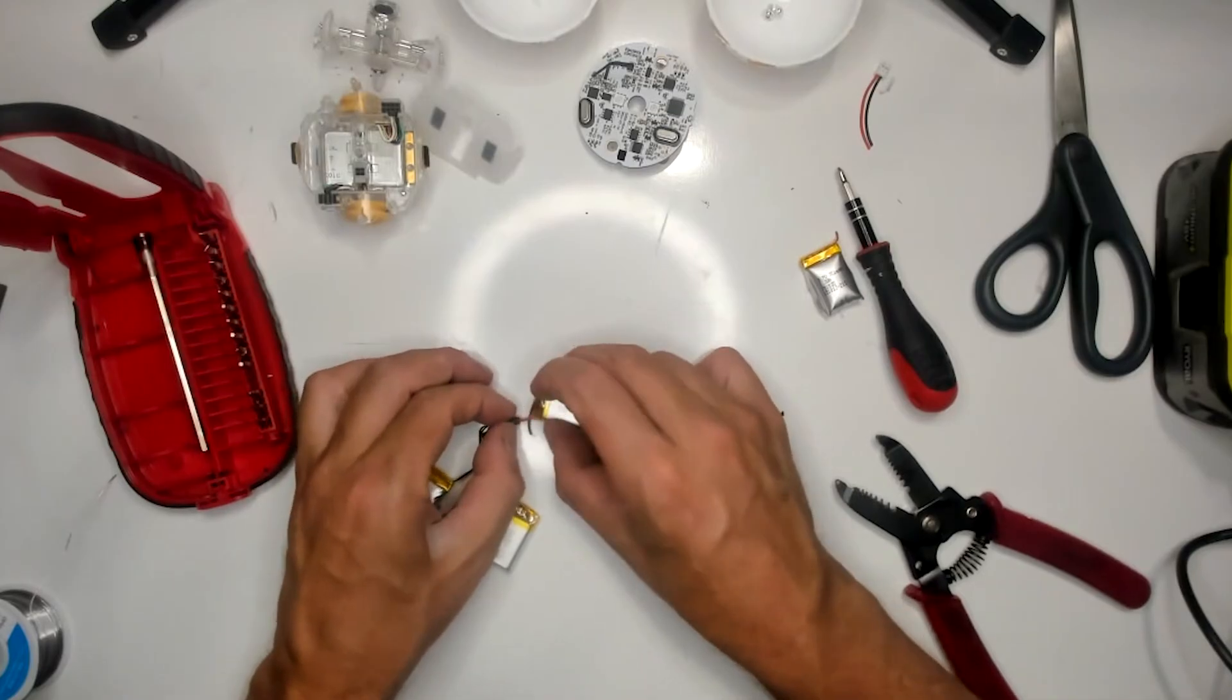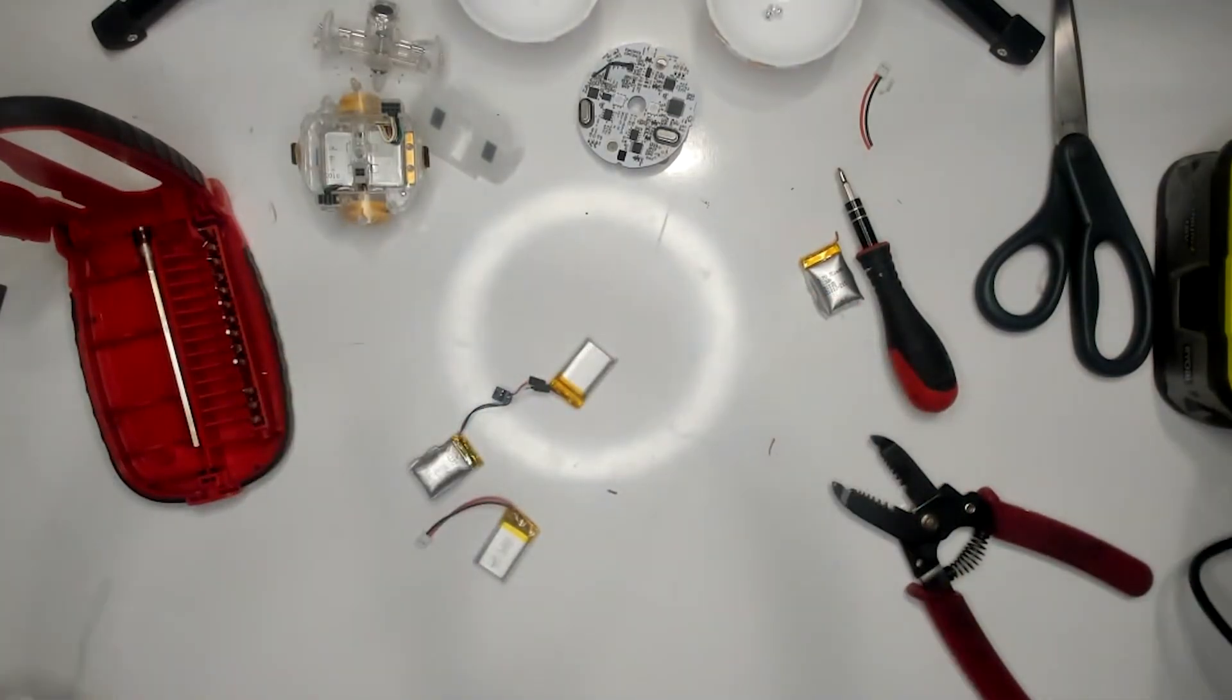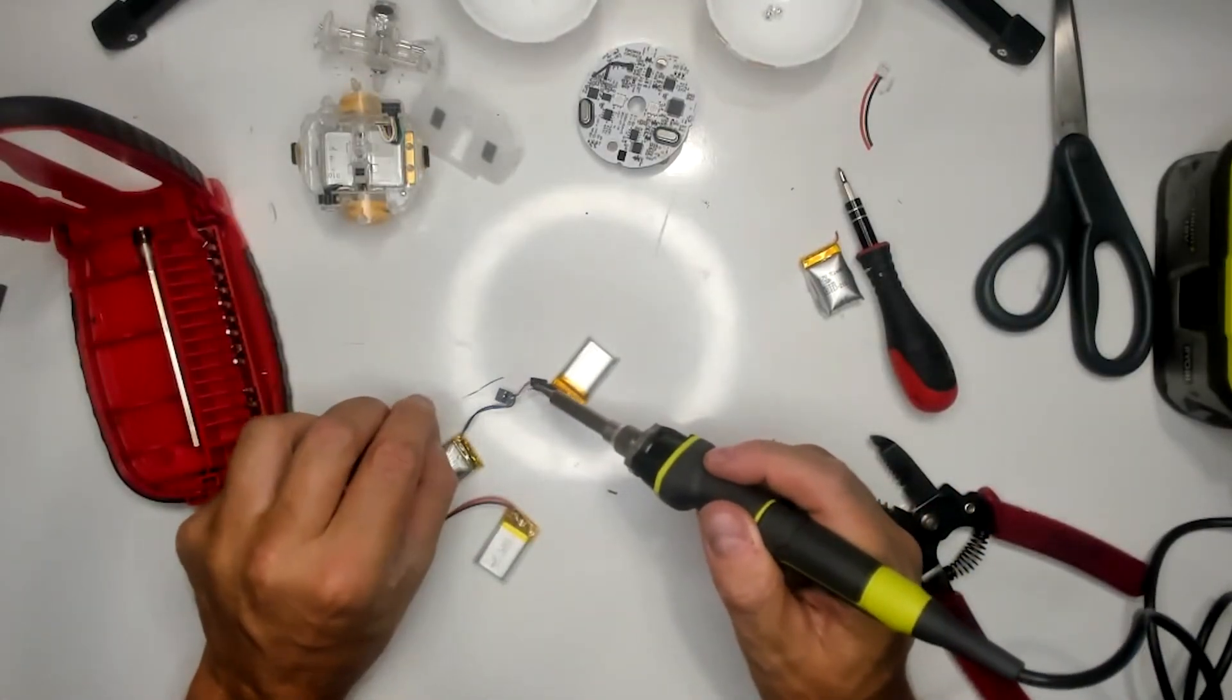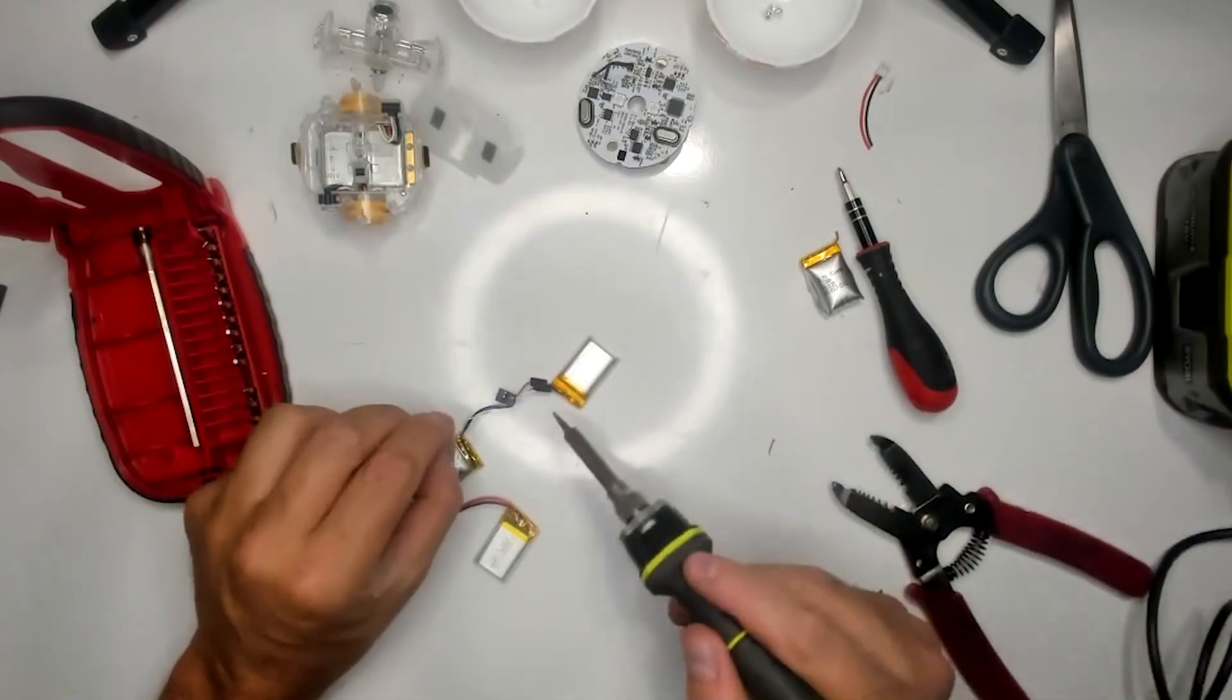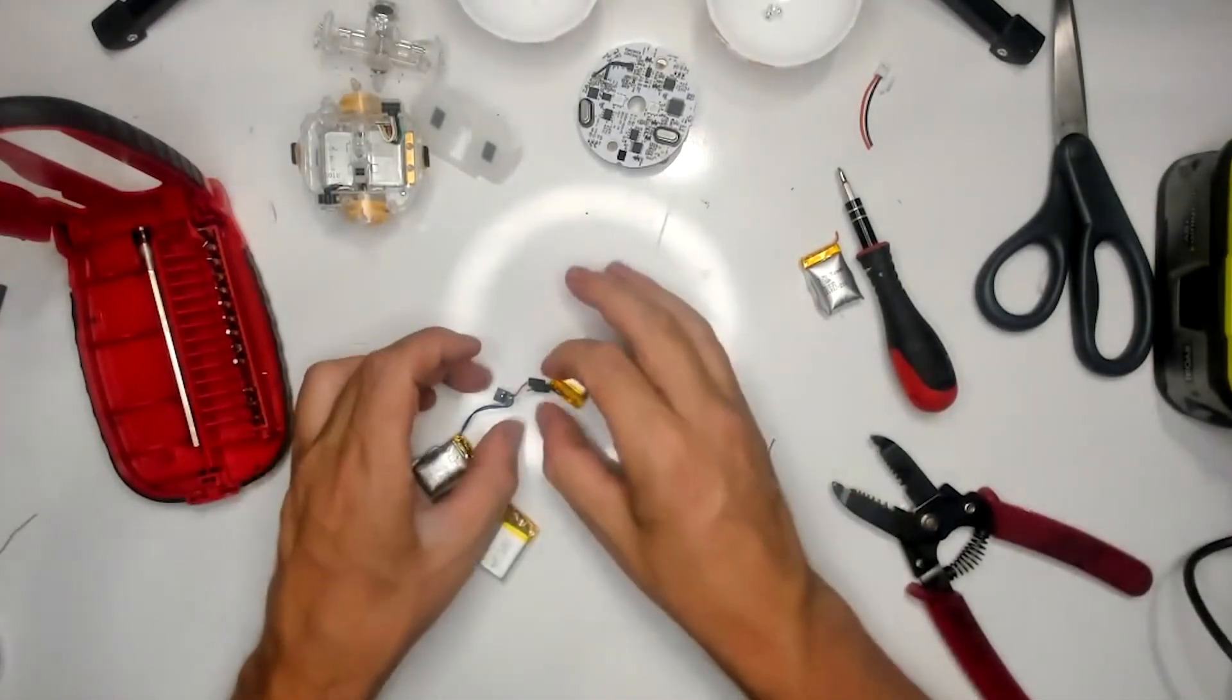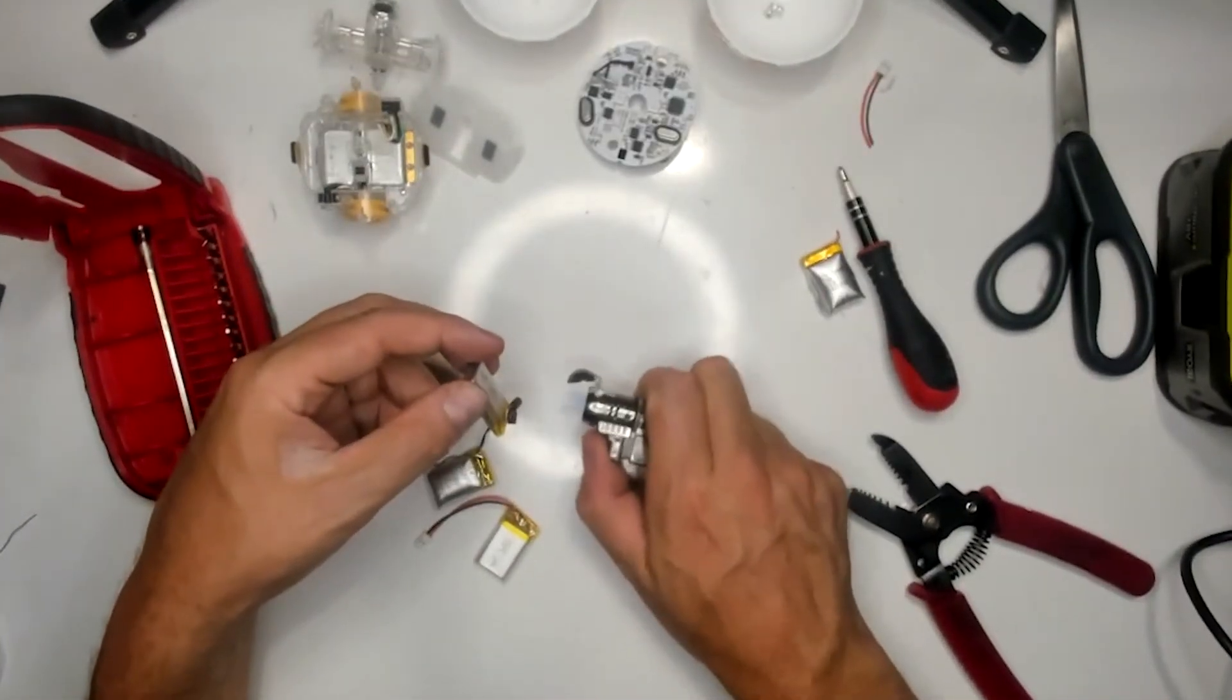Please note that the new batteries came in with red and black wires. Red was positive, black was negative. And then the batteries removed from the unit had different colors as well. One had red and white and the red was positive, white was negative. The other one had blue and black and blue was positive, black was negative.